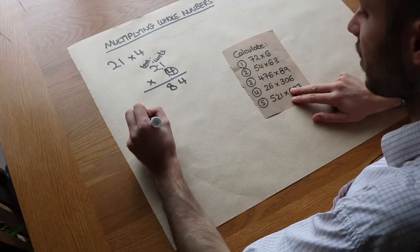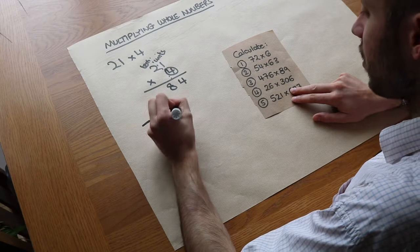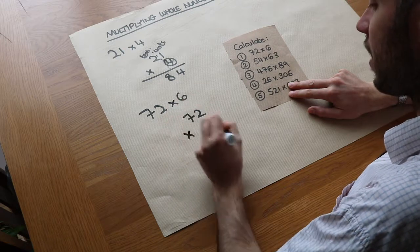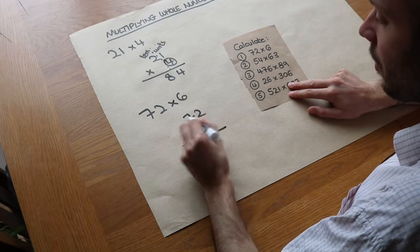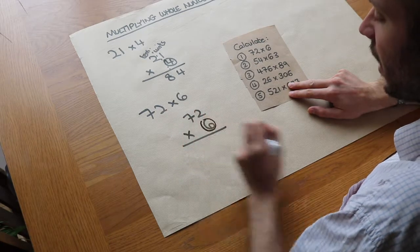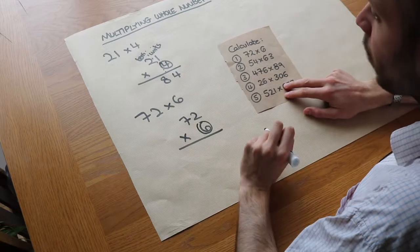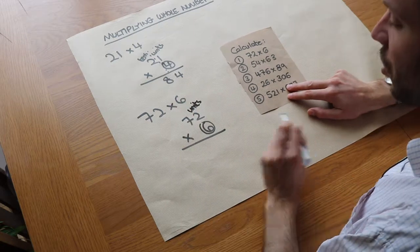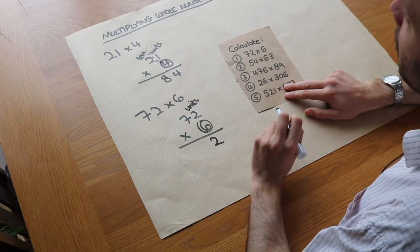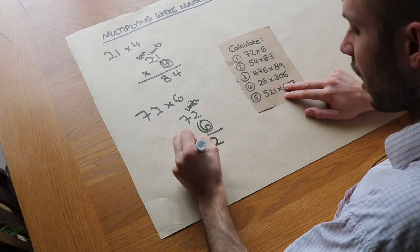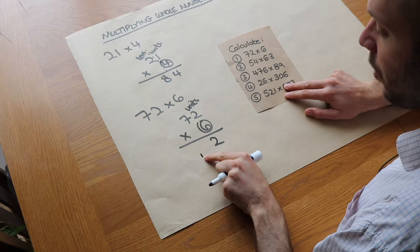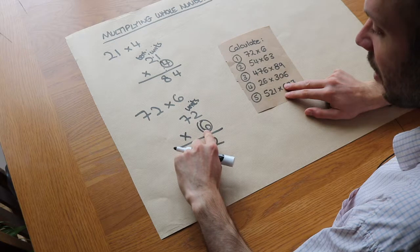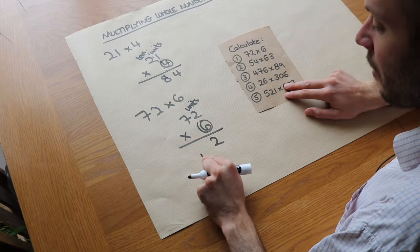Where it becomes slightly harder is where we have a carry. Let's say we had 72 times 6. We arrange it into columns the same way: 72 multiplied by 6. We do 2 times 6, which is 12. This is the units column, so we write 2 units, but we've got that extra 10 — a carry. I put the 1 under the next digit. Then we do 7 times 6, which is 42, plus the additional 1 makes 43.